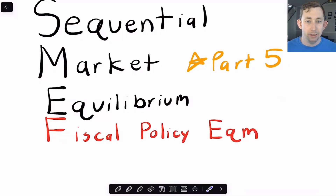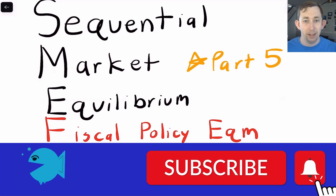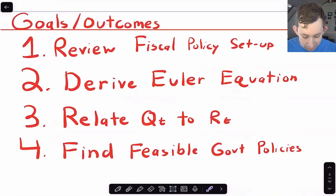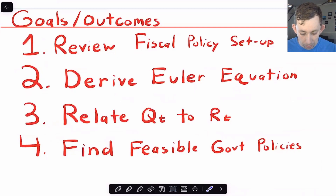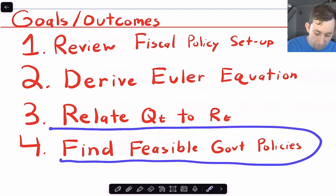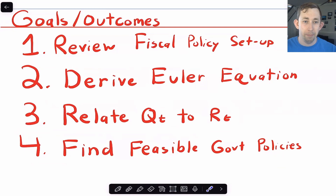Hi guys, welcome back to In Case of Econ Struggles. Welcome to another sequential market equilibrium struggle. This is part five where we're going to start adding the government into our model and talk about fiscal policy equilibrium. Timestamps are below if you would like to jump around. What I want to do in this video is review the setup from part four, derive the Euler equation in this new equilibrium with fiscal policy, relate QT to RT, and find all feasible government policies.